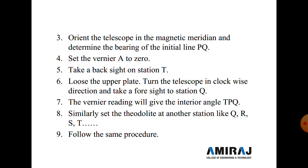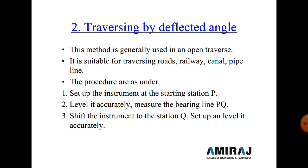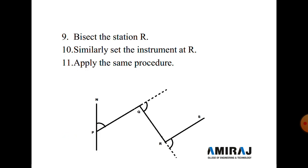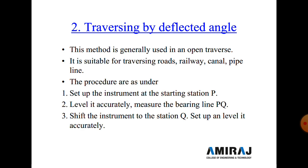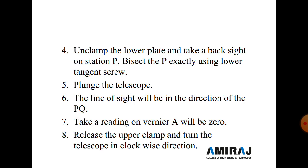Traverse by deflection angle: this method is generally used in open traverse and is suitable for traversing roads, railways, canals, pipelines, etc. The procedure is: set up the instrument at point P, level it accurately, and measure the bearing of line PQ with respect to the north direction.